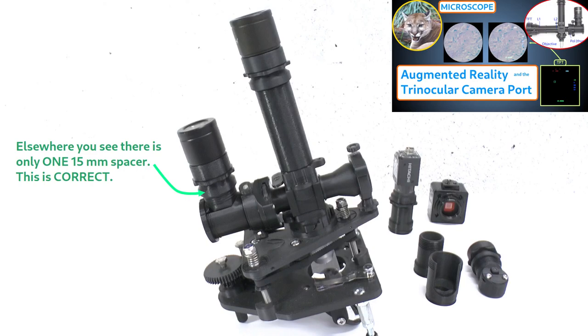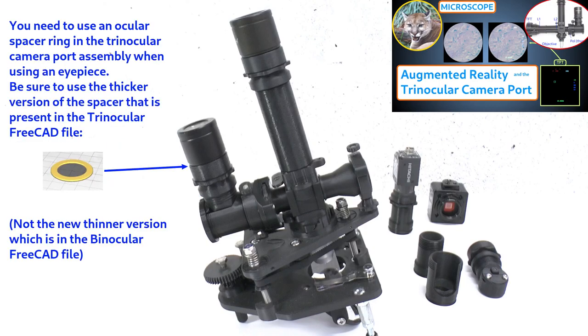While on the subject of the trinocular camera port, bear in mind that you still need to use the original thicker ocular cap spacer under the eyepiece. This spacer was previously available in the binocular FreeCAD file, but because I have now changed that to a thinner spacer, I have included the old thicker ocular cap spacer directly in the trinocular FreeCAD file on GitHub.